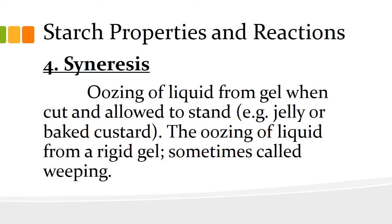Number four is syneresis. It is the shrinkage of a gel and subsequent loss of liquid. Gels are affected by syneresis more quickly if exposed to protein. An example of this is a lemon meringue filling, which reacts to syneresis quickly because it is exposed to protein in the meringue. Another example of syneresis is scrambled egg which, if overcooked, shrinks and produces a liquid.